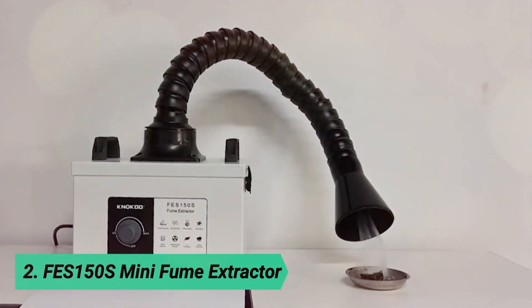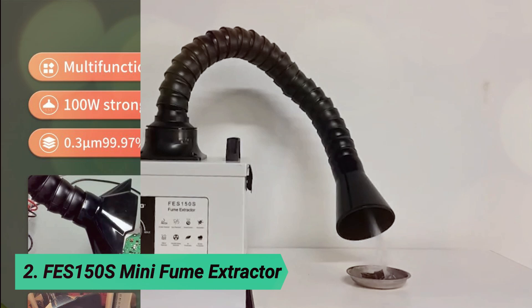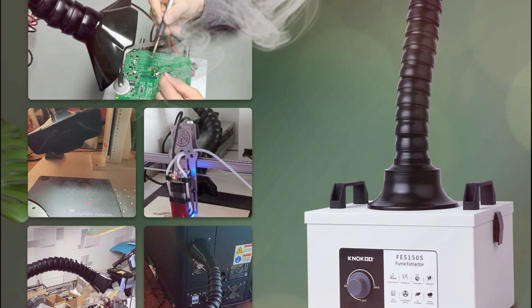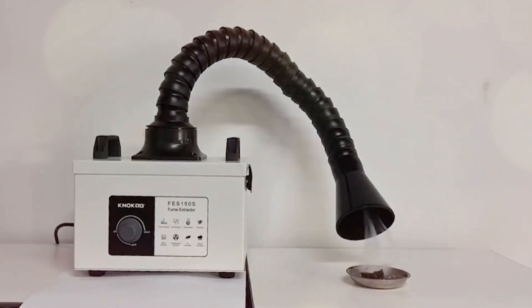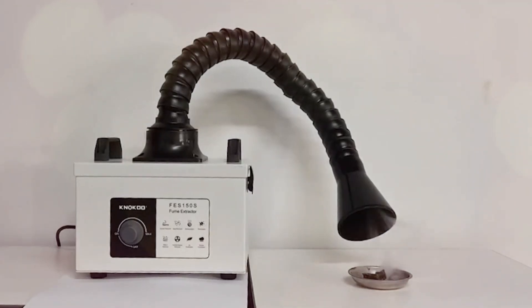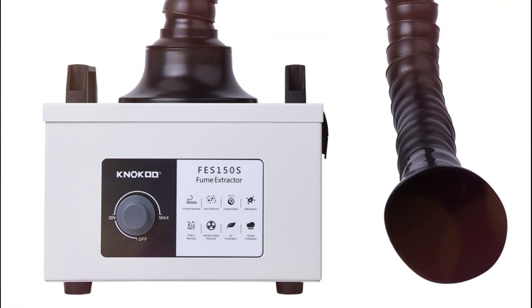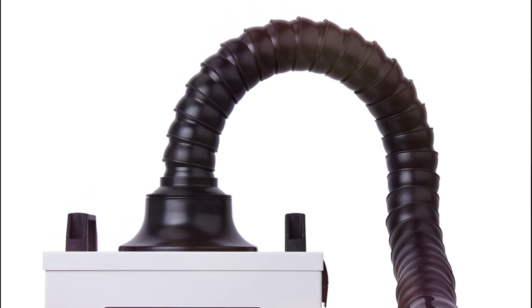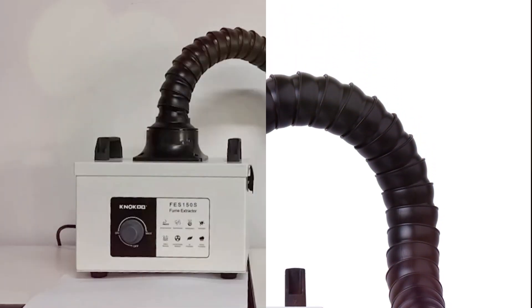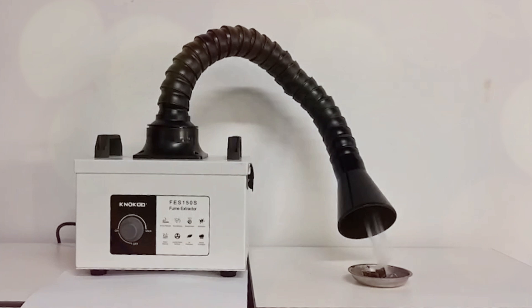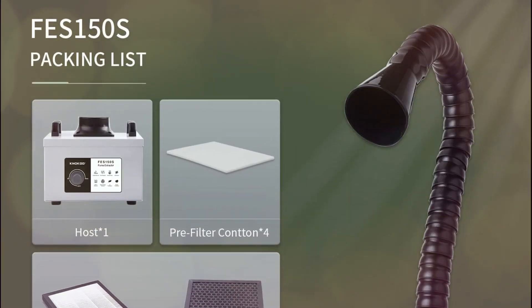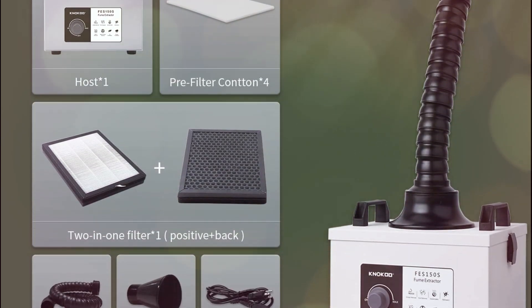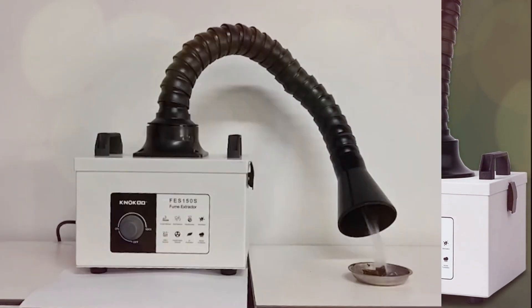At number 2, FES-150S Mini Fume Extractor. This fume extractor features a built-in air circulation filter, ensuring that harmful smoke is absorbed and purified without being discharged directly into the environment. Its 360-degree adjustable smoking pipe allows for easy positioning, with a flexible design that requires no external support, ensuring efficient smoke capture from any angle. Equipped with a high-performance brushless DC motor, it delivers strong suction power while maintaining low-noise operation, making it ideal for long working hours.